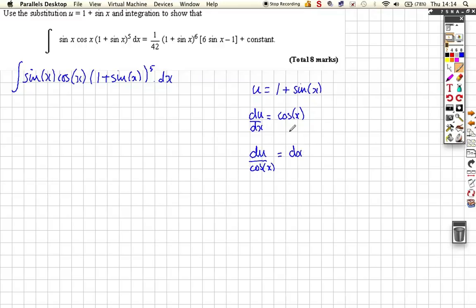I suppose you could think of it as dx cos x, so we've got a cos x and a dx. Both those things are going to be replaced by du. We put du in for this, and then the cos x cancels with that. It doesn't really make much difference.